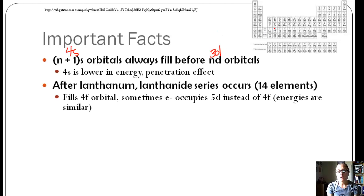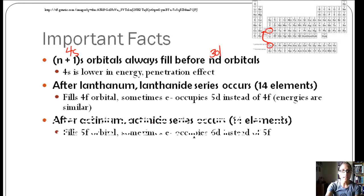After lanthanum, and so here is lanthanum, the lanthanide series occurs. It has 14 elements, and it actually goes right here. It fills the 4f orbital. Sometimes the electrons will occupy 5d instead of 4f because the energies are so similar. So that's kind of something to just keep in mind.